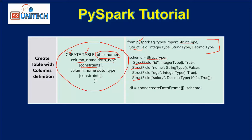Next we can see StructField. StructField is used for defining the column name and the data type of that column. The first one, we can see 'id' and the data type is IntegerType. The last parameter is indicating whether this column will be nullable or not. As we can see, we can define true or false here.